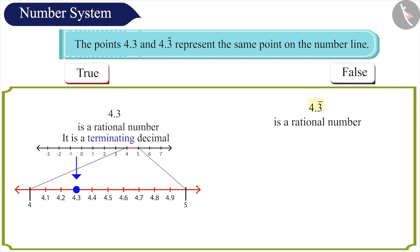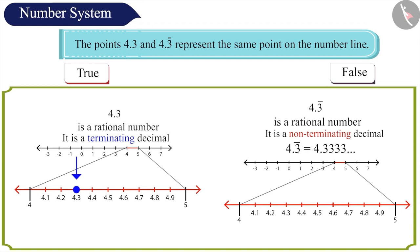But 4.3 bar is a non-terminating decimal. Here, the number 3 is repeating itself after the decimal. This number will lie on the number line between 4.3 and 4.4.